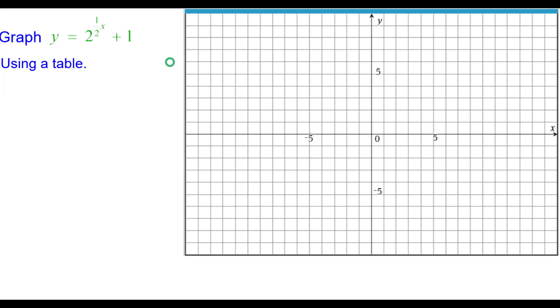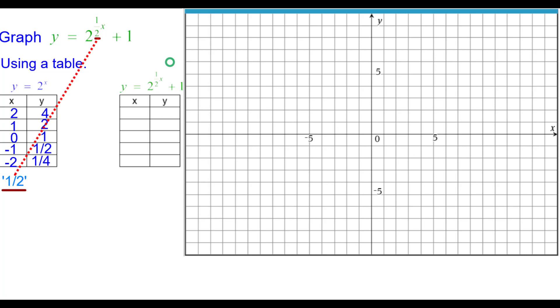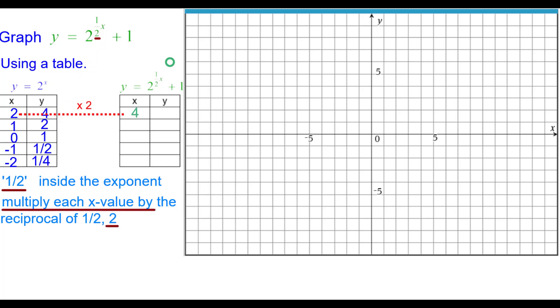Let's go ahead and do the second way using a table. Here's our 5 points that we'll use in our normal y equals 2 to the x parent function. The 1 half that's inside the exponent, we need to multiply each x value by the reciprocal of a half which is 2. So we'll start doing that. 2 times 2 is 4. Please go ahead and pause. Finish this table here on the x values. Resume when you're ready.